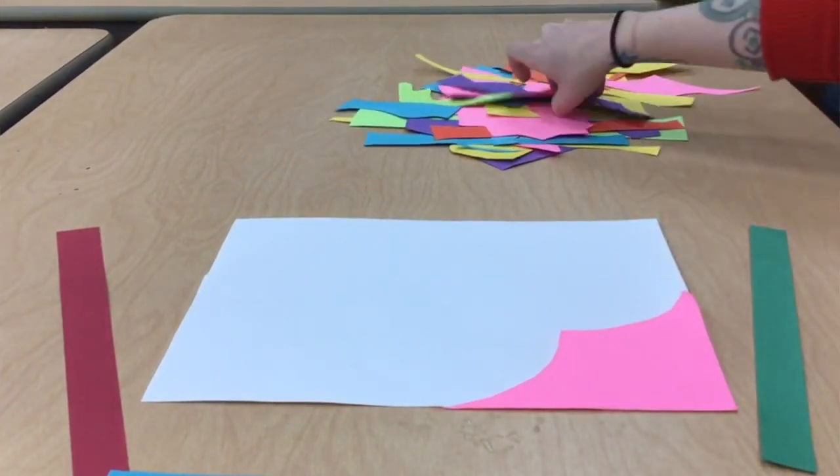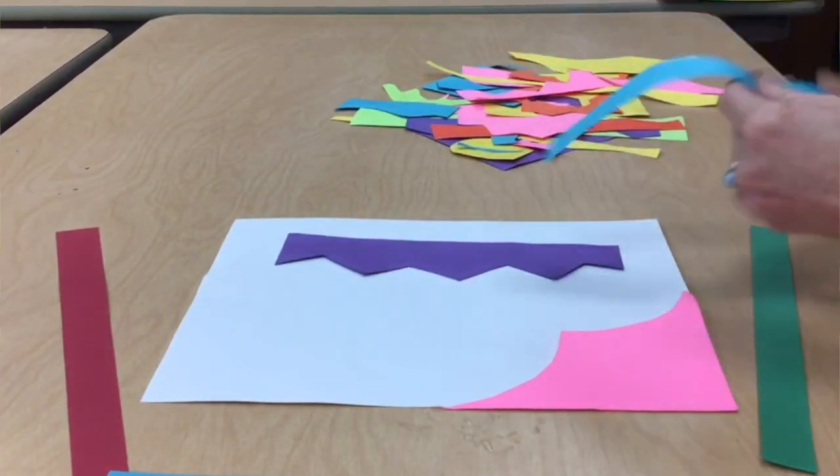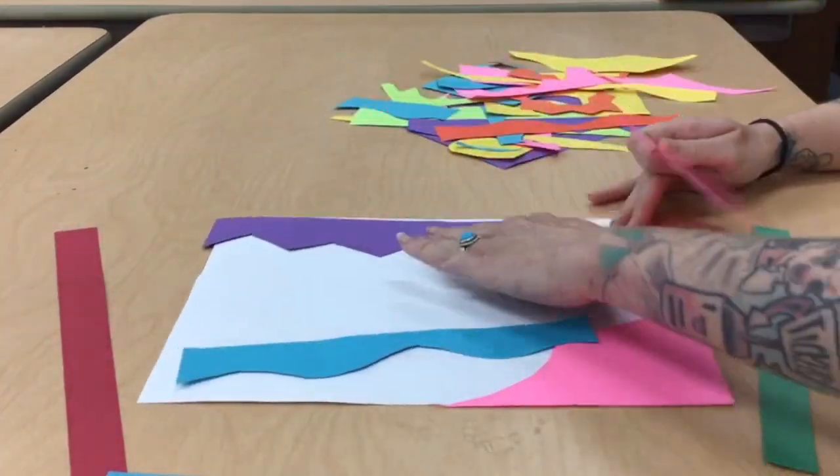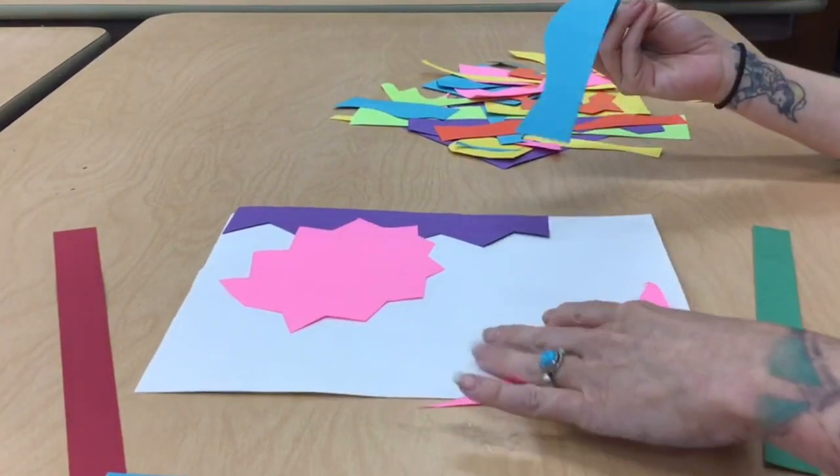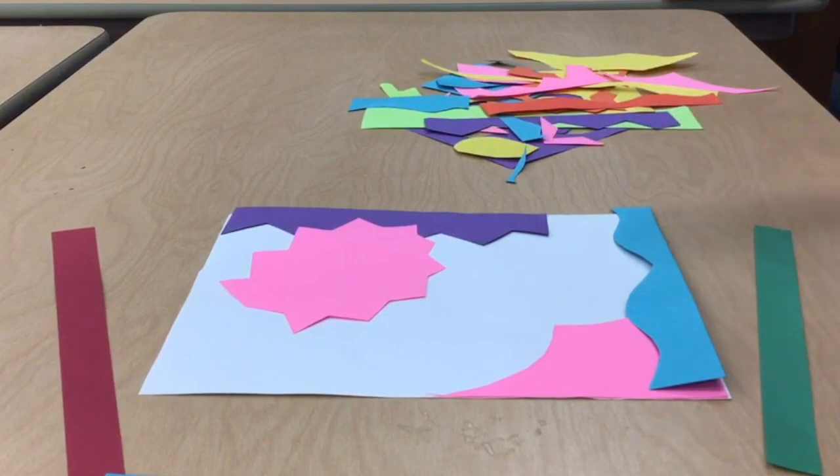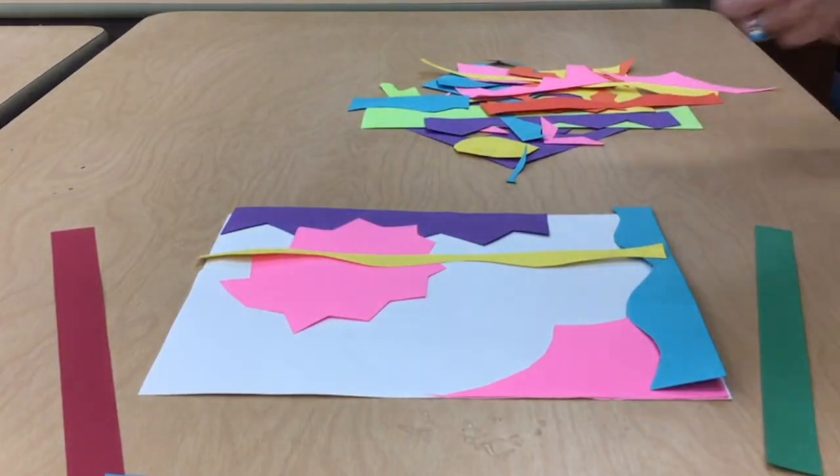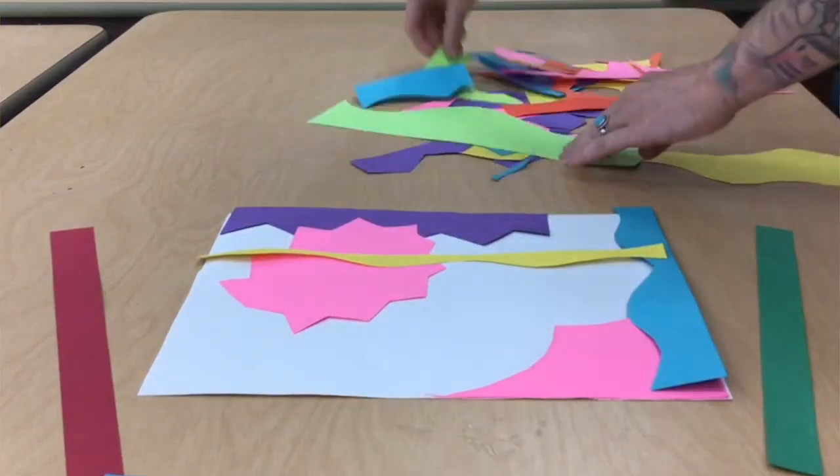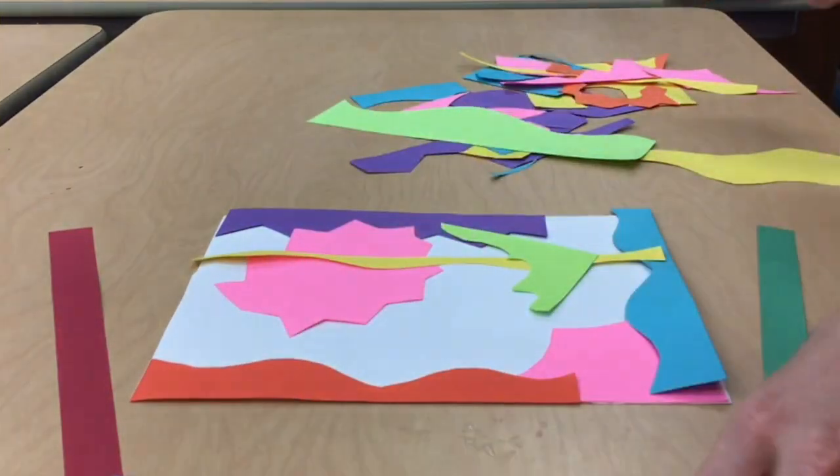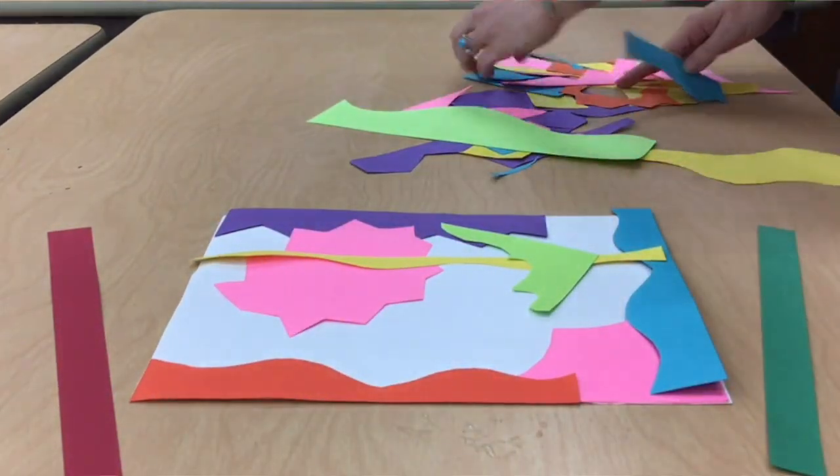Before gluing down your paper cutouts, take the time to look at your colors and designs and move them around your background until you find what is pleasing to your eye. Don't forget that layering and overlapping your paper can enhance the quality of your collage and create new shapes and designs that you may have not seen with just the original pieces.